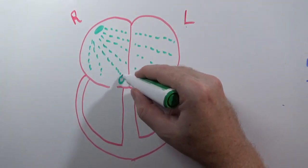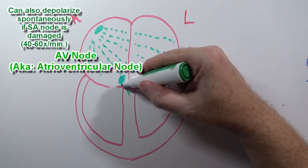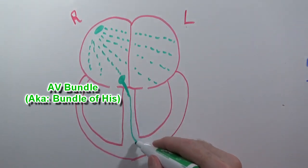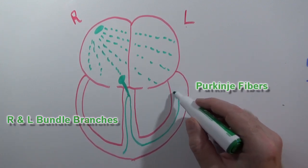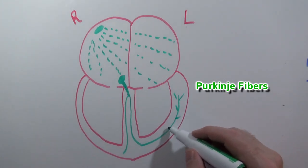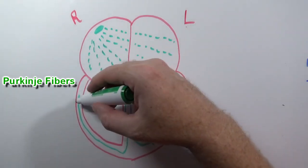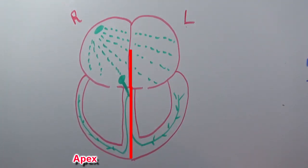Now this right here is the AV node, the atrioventricular node, and extending from that is the AV bundle, also known as the bundle of His. Now that bundle branches into the left and right bundle branches, and finally those bundle branches are going to branch into the Purkinje fibers. The Purkinje fibers are going to branch and bring the electrical impulse into the ventricles to make the ventricles contract. Now the ventricles are going to contract from the apex first, up toward the top of the heart, so we generate more pressure from the bottom to the top, pushing the blood up to the large blood vessels at the top, specifically the pulmonary trunk and the aorta.